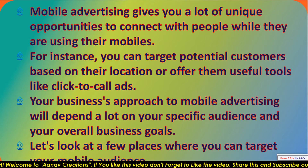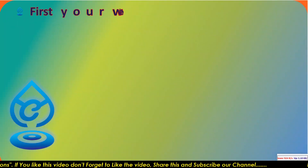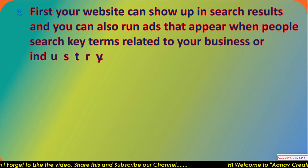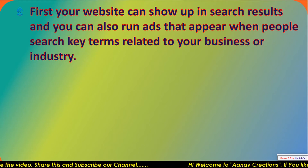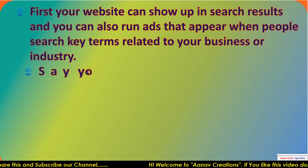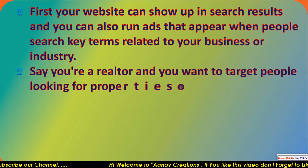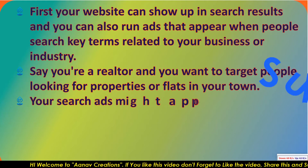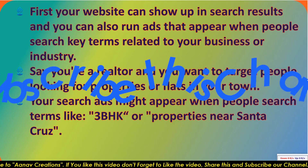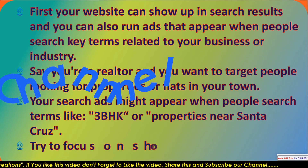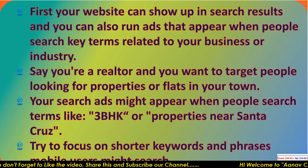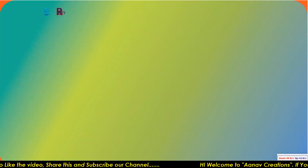Let's look at a few places where you can target your audience on mobile devices. First, your website can show up in search results and you can run ads that appear when people search key terms related to your business or industry. Say you are a realtor and you want to target people looking for properties or flats in your town — your search ads might appear when people search terms like '3BHK' or 'properties near Santa Cruz'. Try to focus on shorter keywords or phrases that mobile users might search.